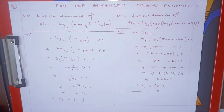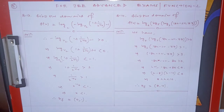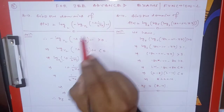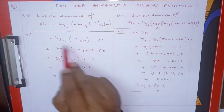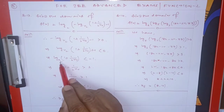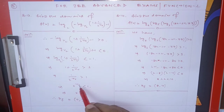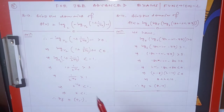Find the domain of f(x) [a nested log expression]. For log(x) to be defined, x must be positive. Multiplying the inequality by -1 changes the sign. Since the base is ½ (less than 1), the inequality direction reverses again. Taking (½)⁻¹ = 2, and raising to the 4th power gives x < 1. Combined with x > 0, the domain is (0, 1).